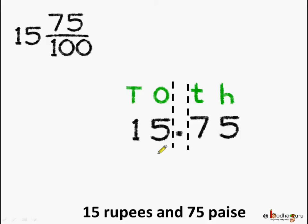15 and 75 by 100 can be written as 15 goes to the tenths and ones place. Then, it is followed by a decimal point. Then, we write the fraction part. As it is 100 here, we extend till the 100th place and 5 goes to the 100th place and 7 goes to the tenth place. So, the answer is 15.75 rupees.